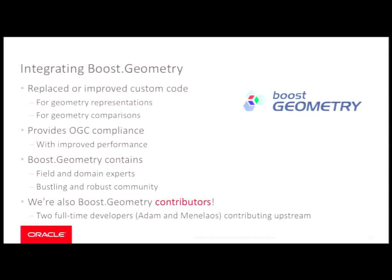With Boost.Geometry, we got a lot for free — a good starting point that was not only liberally licensed but nicely written. It gave us OGC compliance, as far as how the algorithms handle certain edge cases. But it also gave us a performance boost, which was an unexpected surprise. I had always assumed the old stuff sacrificed accuracy for speed, but that didn't turn out to be the case. So we got a speed boost on top of it.